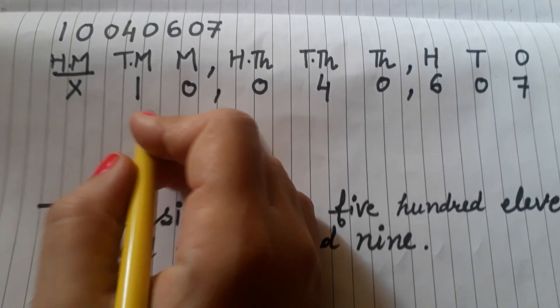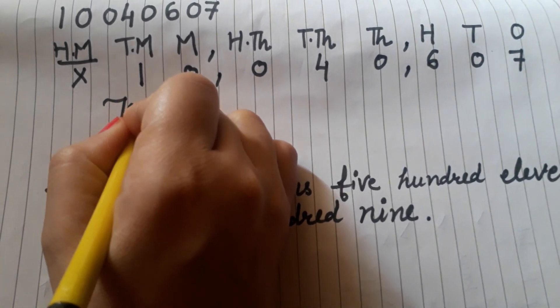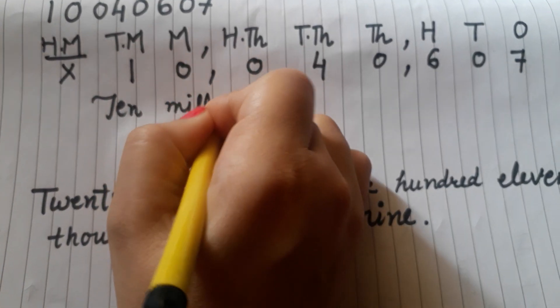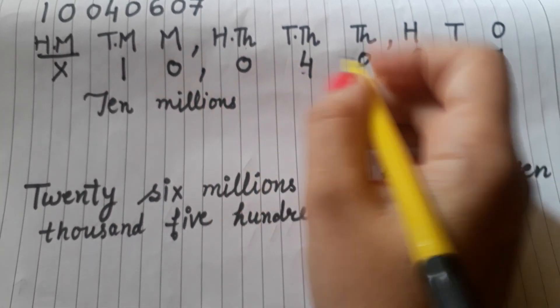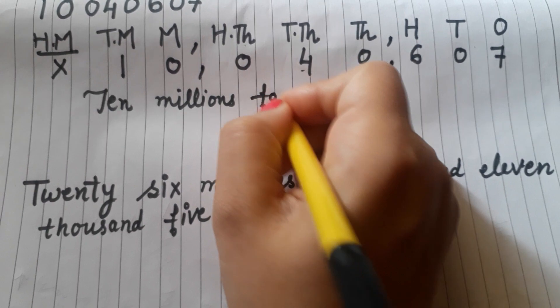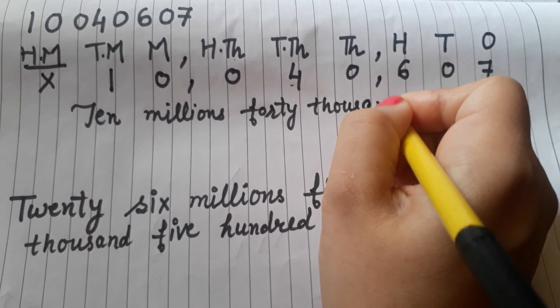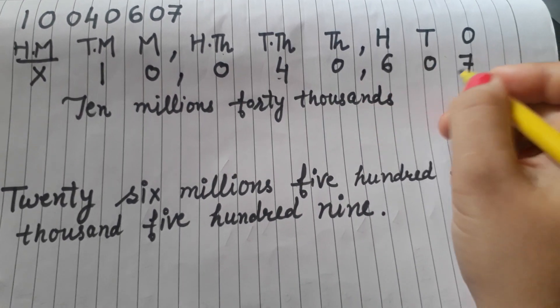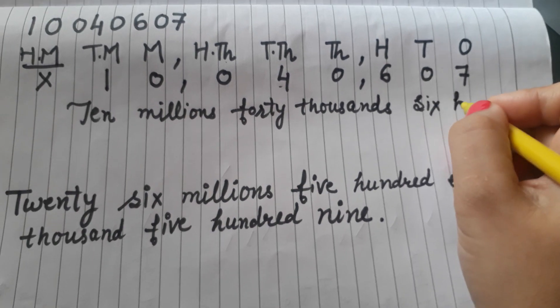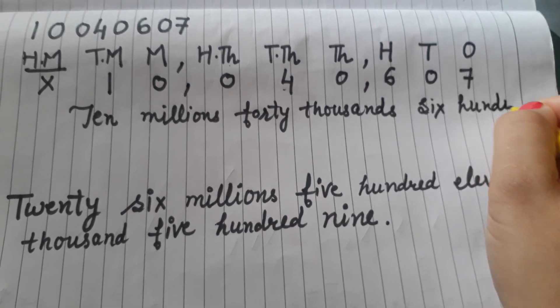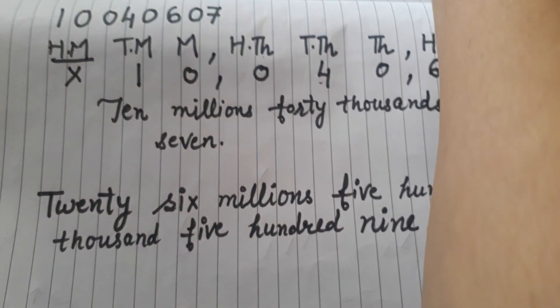Then how do we write this in words? This is 10 million, 40 thousand, 607.